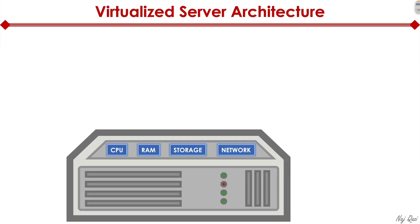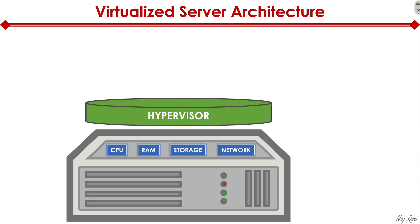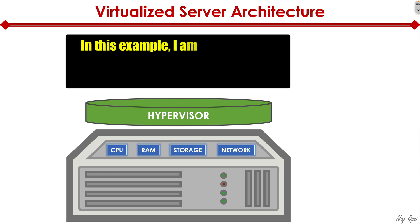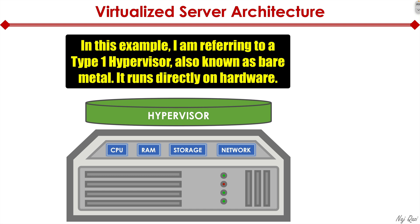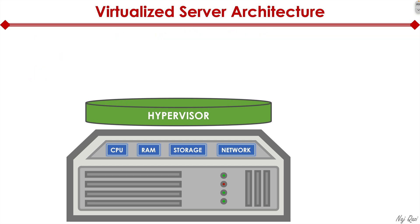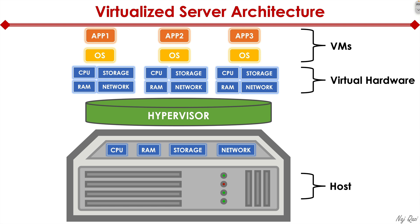We take the same physical server that has CPU, RAM, storage, and network, but instead of an operating system, we install a hypervisor. VMware's hypervisor is called ESXi. Microsoft has their own hypervisor called Hyper-V. We also have KVM. There are different types of hypervisors available on the market that are installed on top of the server. What that allows us to do is provision virtual machines, or VMs, on top of that hypervisor — and each VM has a certain amount of CPU, RAM, and storage resources.